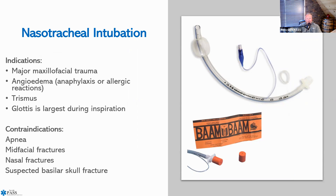Indications for nasotracheal intubation include maxillofacial trauma when oral intubation isn't possible, angioedema (swelling of the oral cavity or neck caused by anaphylaxis or allergic reaction), and trismus (jaw clenching). Importantly, the glottis is largest during inspiration, so when performing a nasotracheal intubation, advance the tube during inhalation to pass it through the glottic opening.